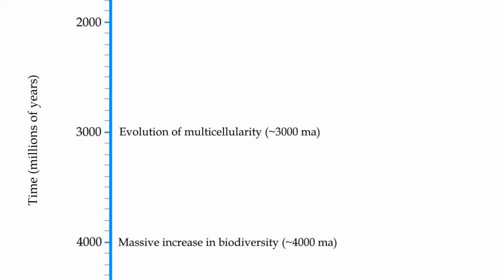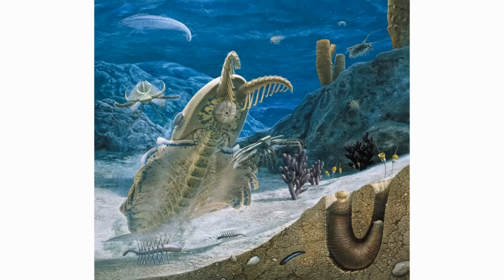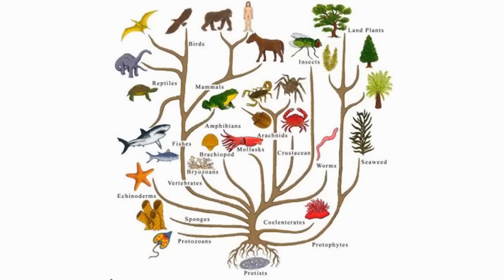In the last episode, we covered the first 4 billion years of our alien planet's history, including the evolution of complex multicellular life and the resultant explosion of biodiversity from which emerged two body plans. As of yet, these body plans only serve as theoretical blueprints, but with the passing of millions of years, the various descendants of these ancestral forms may undergo heavy modification as they diversify into separate lineages, or clades.